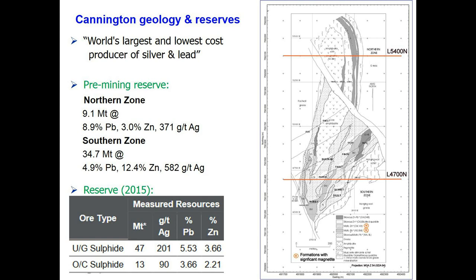Here's a geological plan. The main thing to notice is that the deposit is divided into two zones — northern and southern — by the Trepell fault. The deposit is extremely heavily structured, having been folded and faulted many times, and you can see a folded structure particularly visible in the south end. In terms of reserves, the pre-mining reserve is shown, and the current reserve below. Tonnages have actually increased, so it's obviously a sustainable resource, but there has been a loss of grade in silver and zinc, though lead grade has barely changed. It's still an important silver and lead mine — for many years touted as the world's largest and lowest-cost producer of silver and lead.